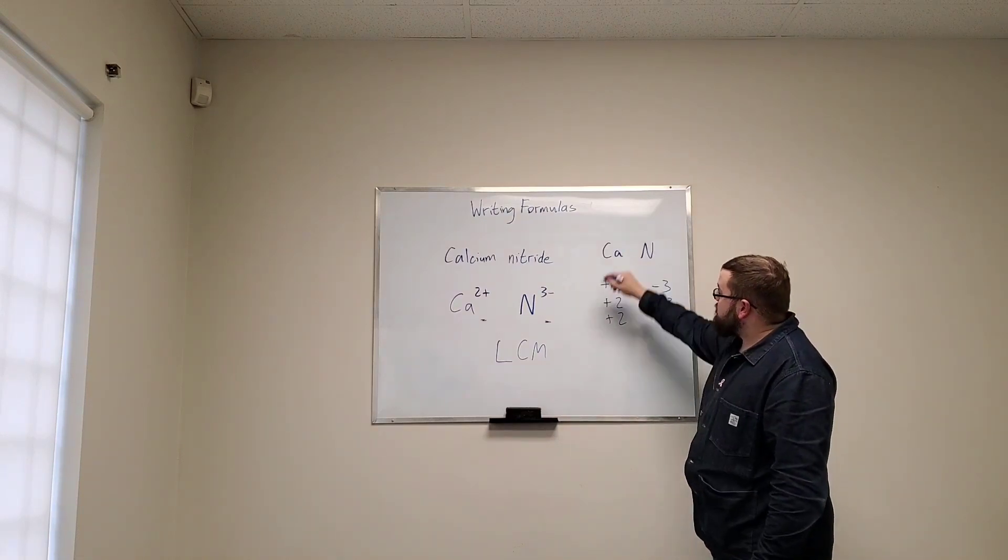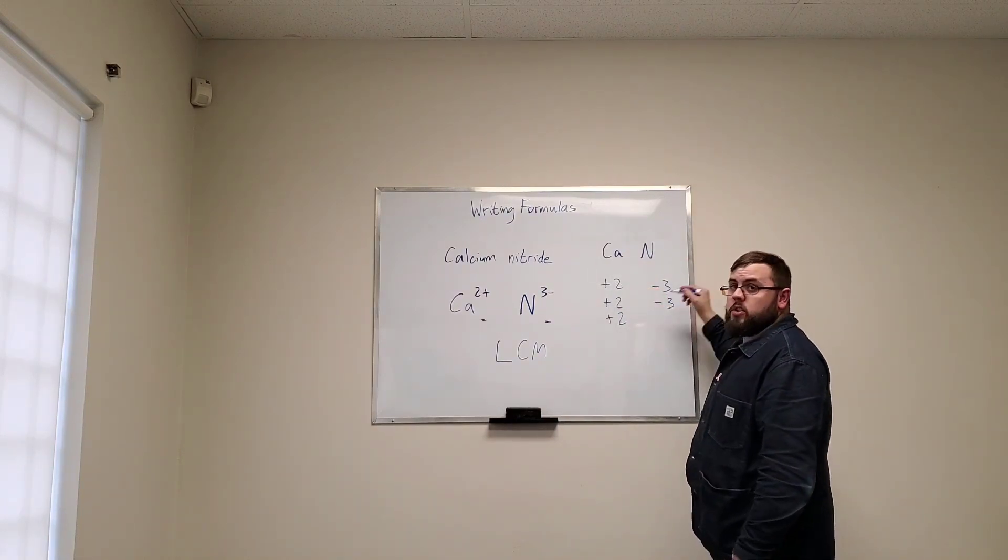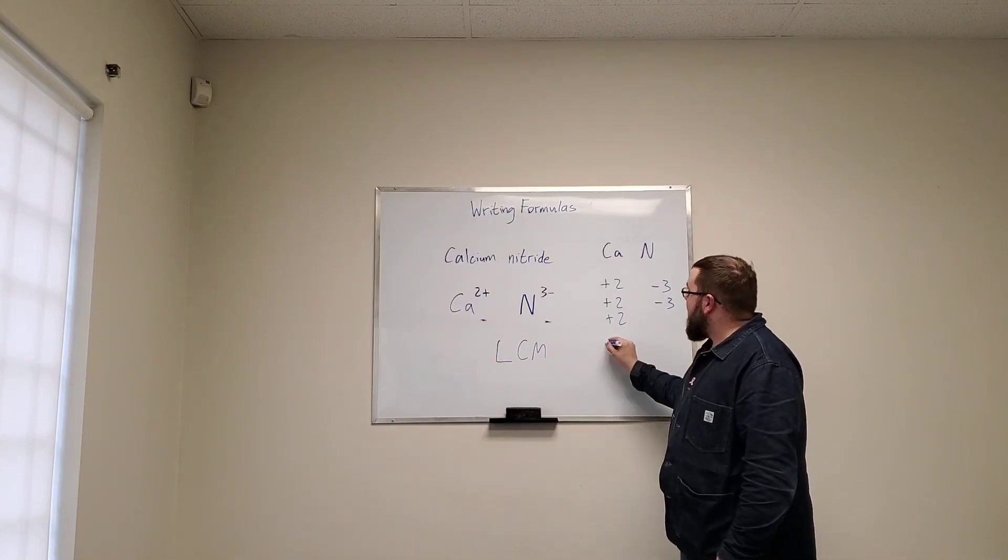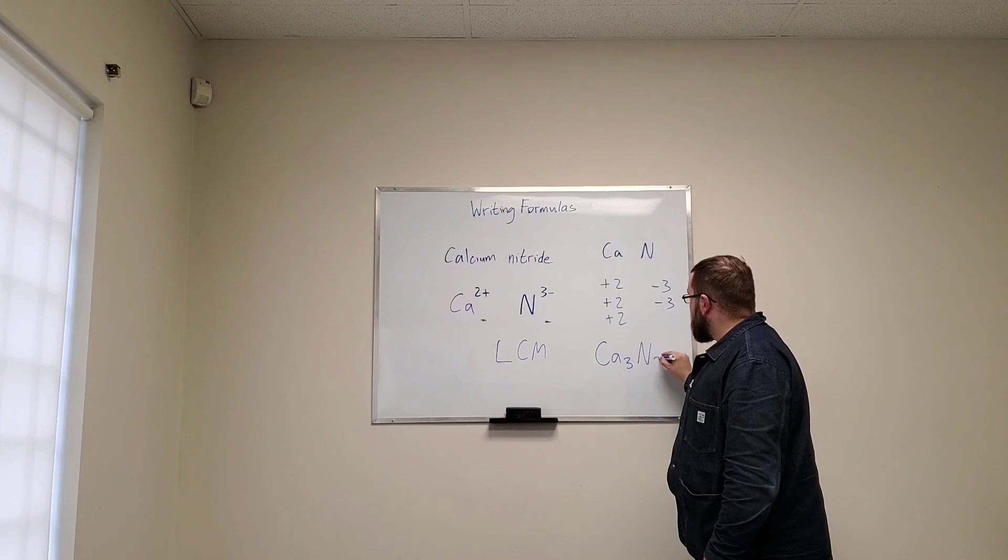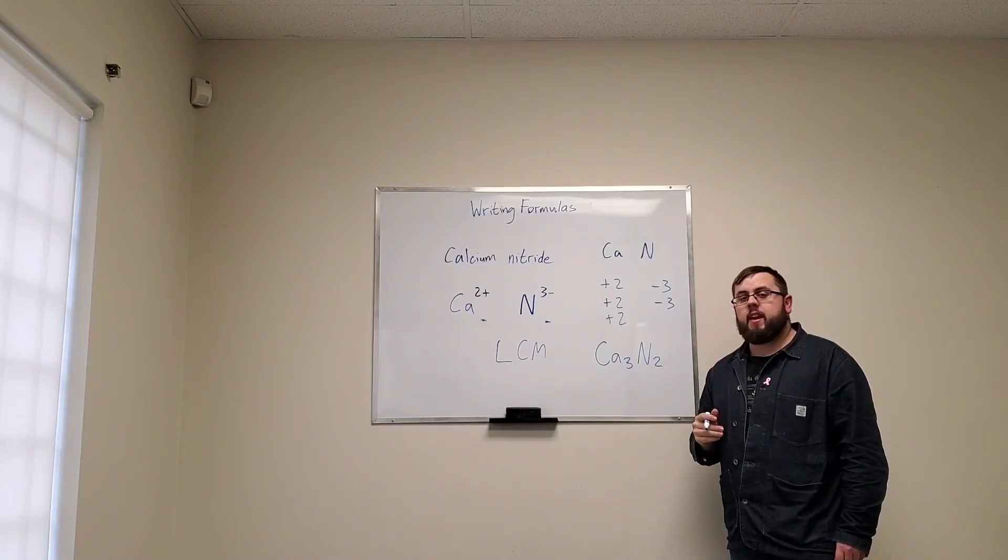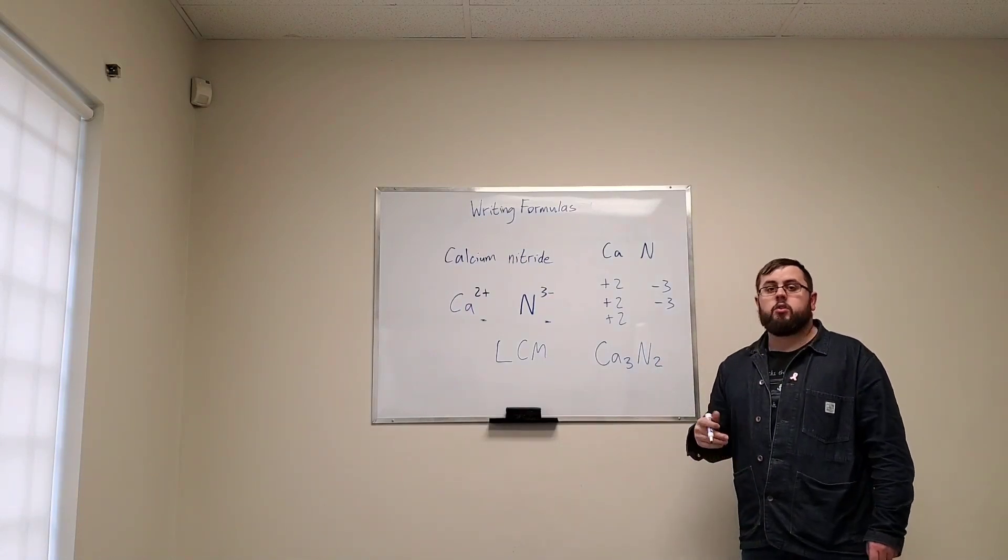So this tells us that I need 3 calcium ions and 2 nitrogen ions, which means that I have a final formula of Ca3N2.